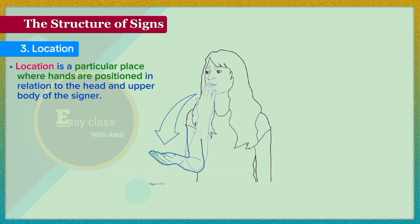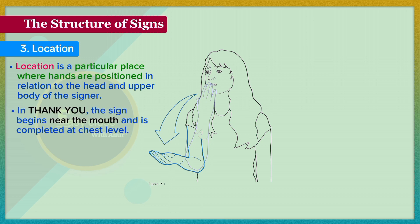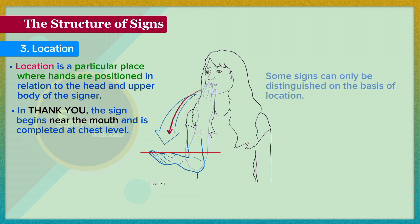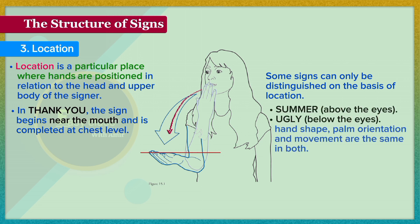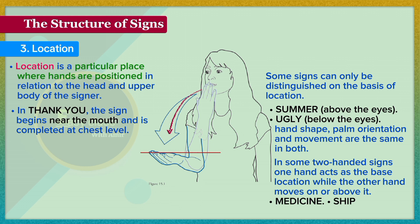Location is the articulatory parameter of ASL identifying the place where handshapes are positioned in relation to the head and upper body of the signer. In 'thank you,' the sign begins near the mouth and is completed at chest level. Some signs can only be distinguished on the basis of location, as in the difference between 'summer' above the eyes and 'ugly' below the eyes, because handshape, palm orientation, and movement are the same in both. In some two-handed signs, for example 'medicine,' one hand acts as a base location while the other hand moves on or above it.